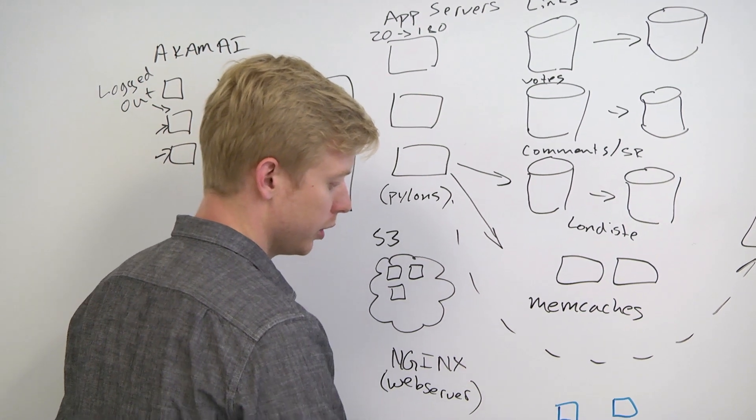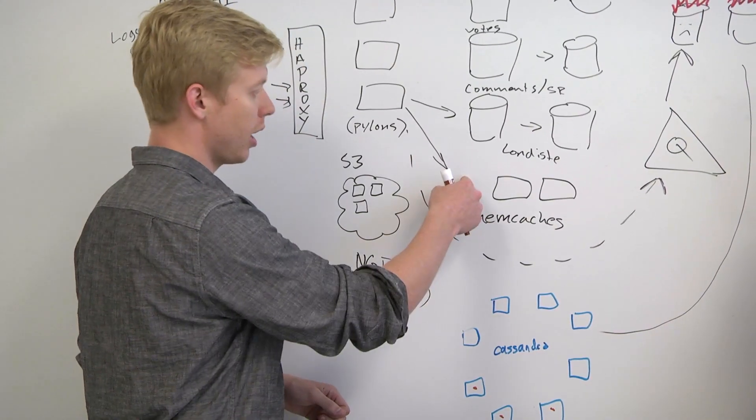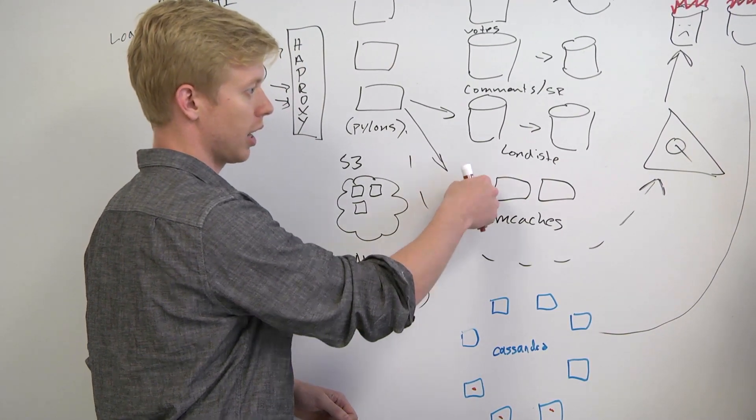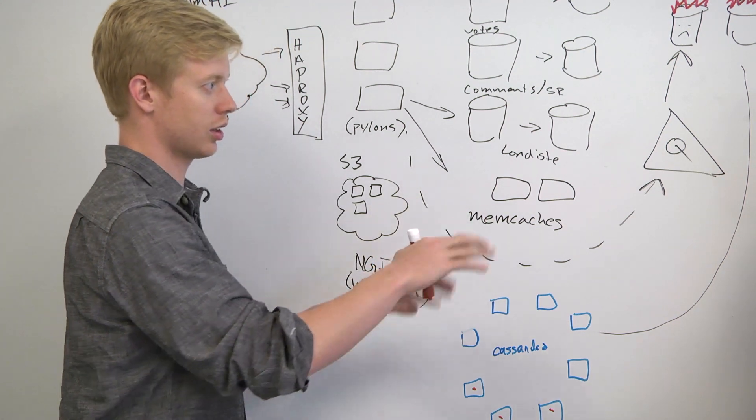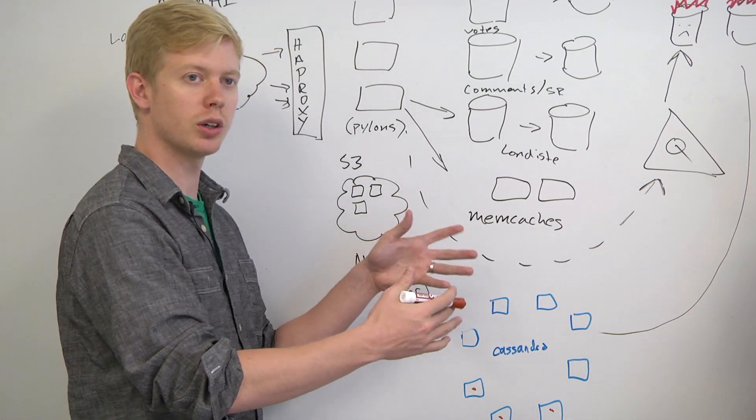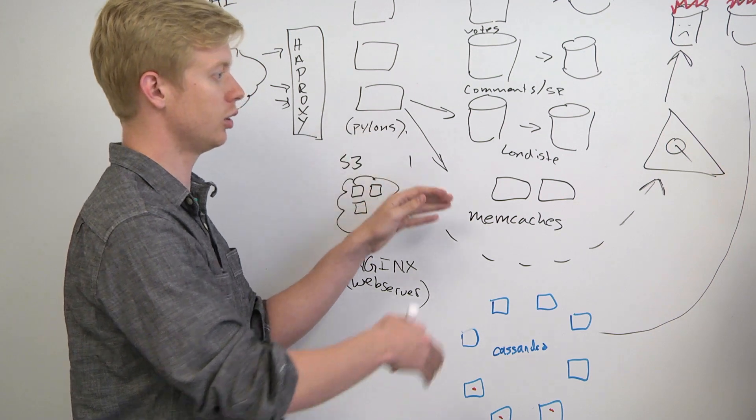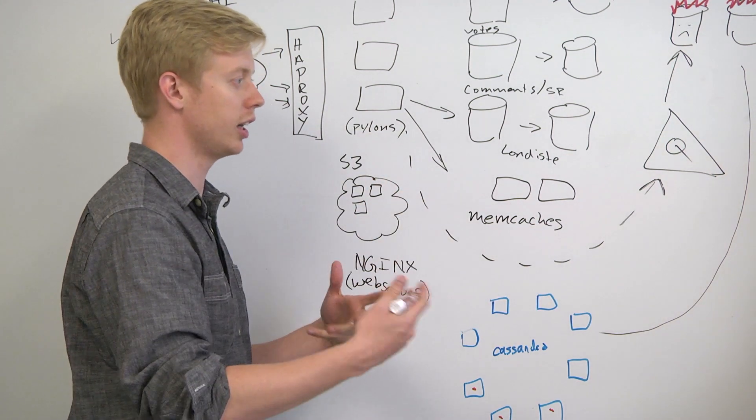When we store data on multiple nodes in Cassandra, it's different from how we store data across different nodes in Memcached. Correct me if I'm wrong, when you distribute across Memcached, you basically hash your key to a particular Memcached box and there's no notion of replication.